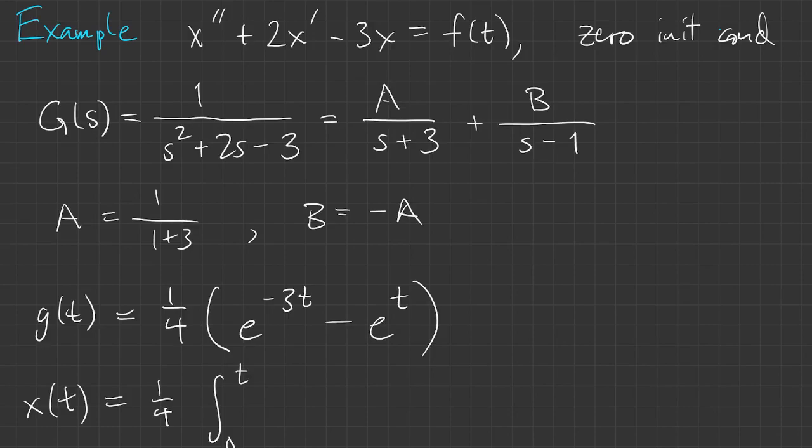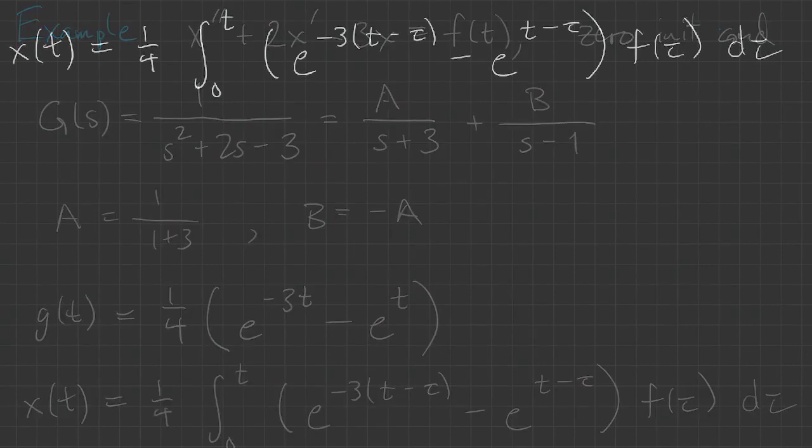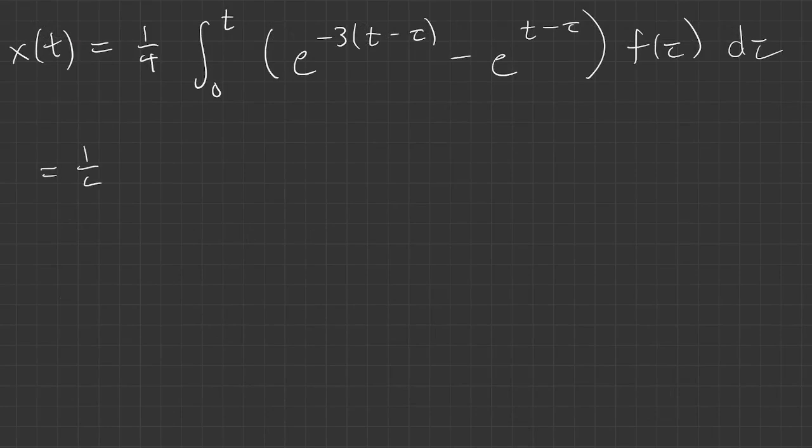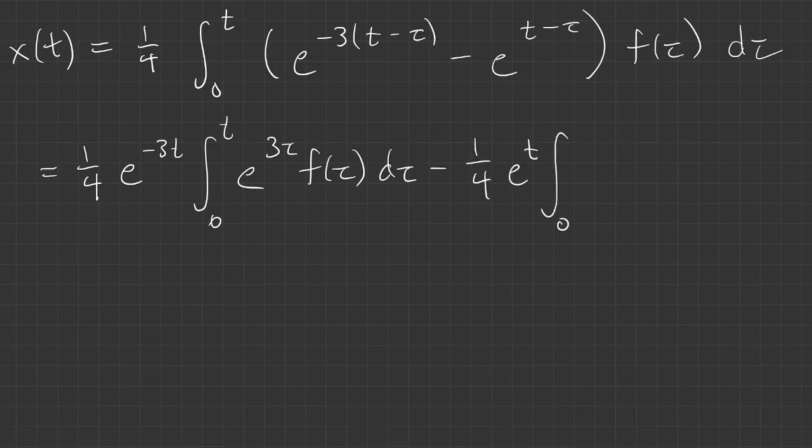So our impulse response is a combination of e to the minus 3t and e to the t. That means we can write the solution as a convolution, which, if we break it out, is an e to the minus 3t times an integral involving f, and e to the t times an integral involving f.